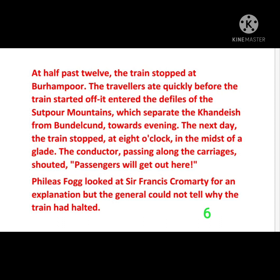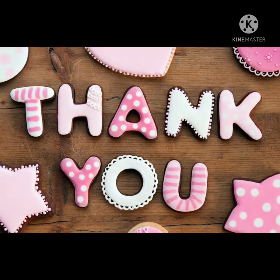The conductor, passing along the carriage, shouted, 'Passengers will get out here.' Phileas Fogg looked at Sir Francis Cromarty for an explanation, but the general could not tell why the train had halted — halted means stopped. Phileas Fogg asked Sir Francis why the train stopped there, but he could not explain it. I hope you have understood clearly. We will learn the remaining part in the next session. Thank you all, take care, bye bye.